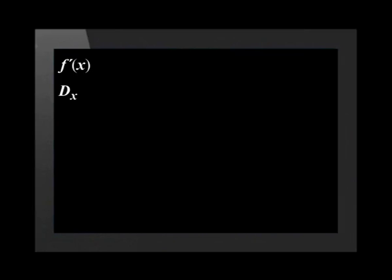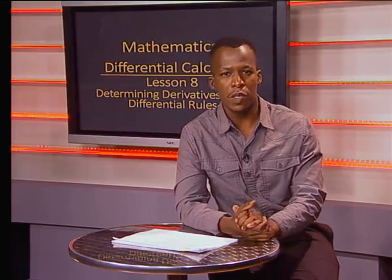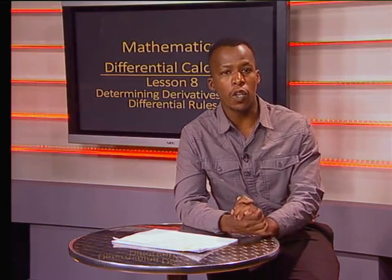Here is f dash of x, sometimes called f prime of x. A capital letter D with a subscript x, D divided by dx, dy over dx, and d f of x over dx are other notations that are used. The correct phrase we use for all of these is the derivative of f with respect to x. Any of these notations may be used in a test or an examination, so make sure you know them.